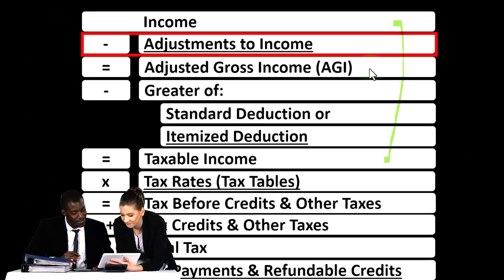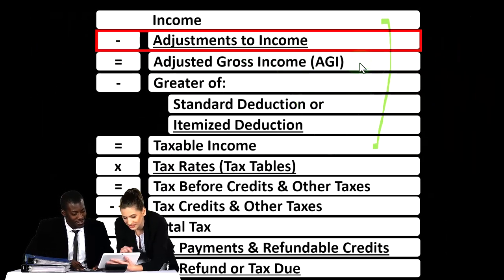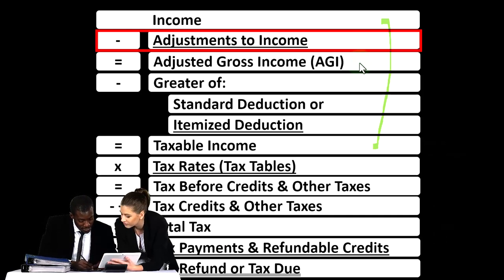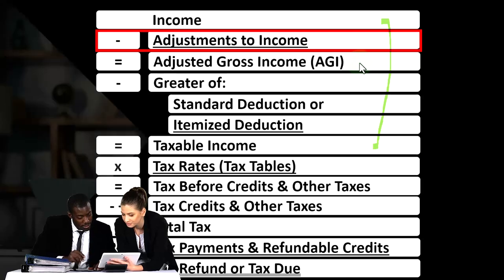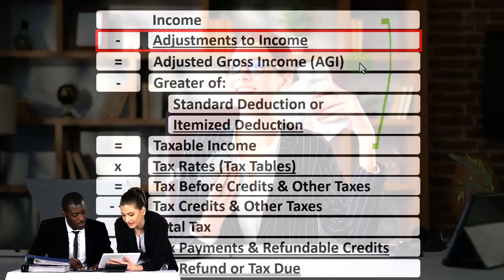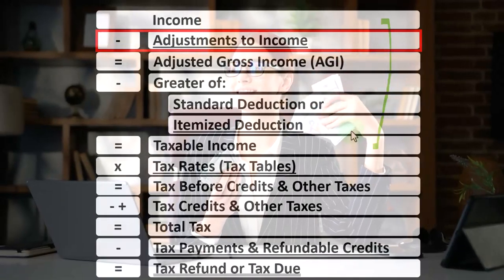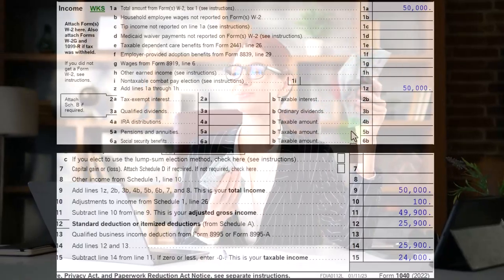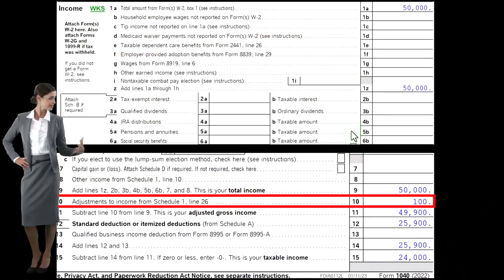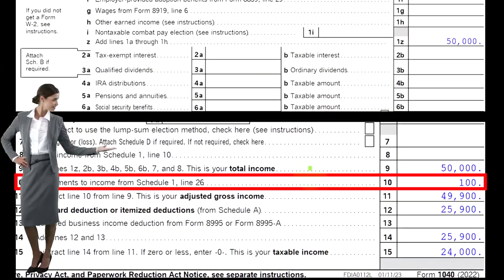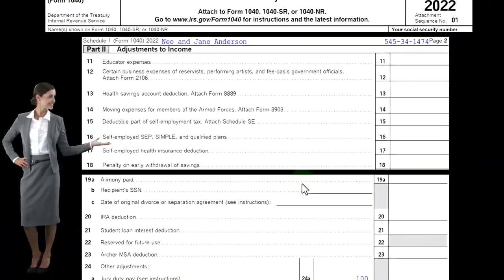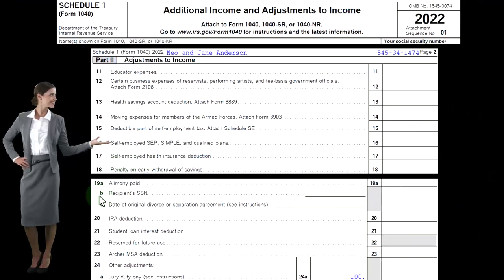The AGI is an important number because it's usually used when we think about phase-outs due to income limitations for deductions and credits. Also note that there's no hurdle we typically need to clear with the adjustments to income, as opposed to the hurdle we need to clear when doing itemized deductions — that hurdle being the standard deduction. When looking at the first page of Form 1040, we're focused on the adjustments to income from Schedule 1, and on Schedule 1 page 2.